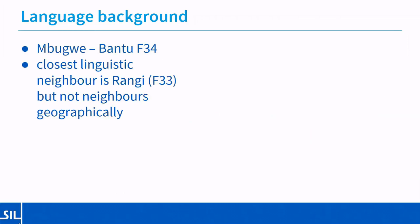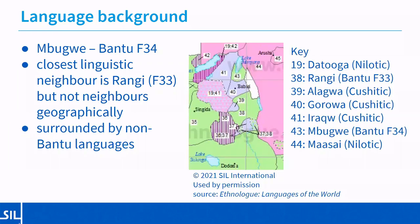Its closest linguistic neighbour is Rangi, F33, but they're not geographical neighbours. In fact, both Rangi and Mbukwe are surrounded by non-Bantu languages. Here on the map, Mbukwe is the green area number 43 at the top and centre, and Rangi is the green area 38 in the middle.